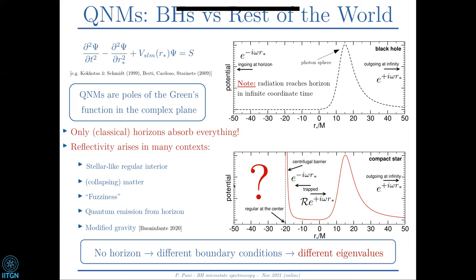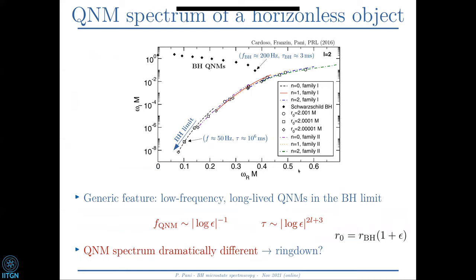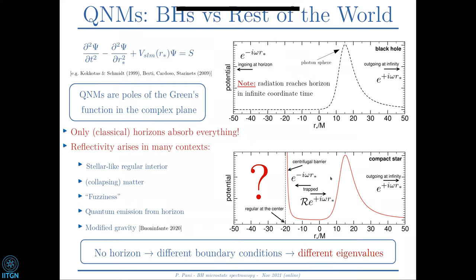Comparing the quasi-normal modes of a horizonless object with those of a black hole, they are totally different. Here I show the quasi-normal modes of a Schwarzschild black hole versus an exotic compact object. In the black hole limit, as epsilon goes to zero, the modes of an exotic compact object go to very different values on a logarithmic scale. The reason is that these modes are related to trapped modes within the potential barrier — low-frequency modes that live in this cavity between the interior of the object and the photon sphere barrier.